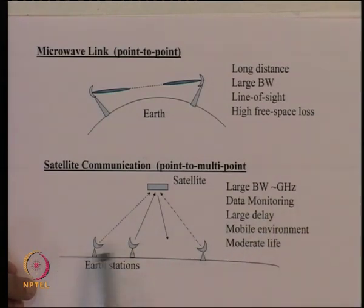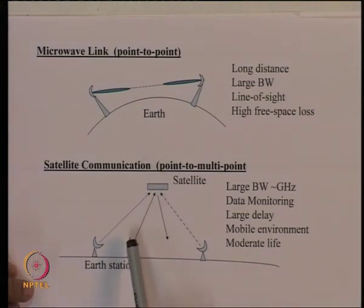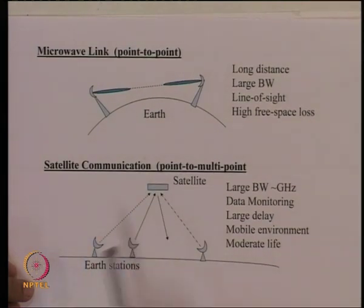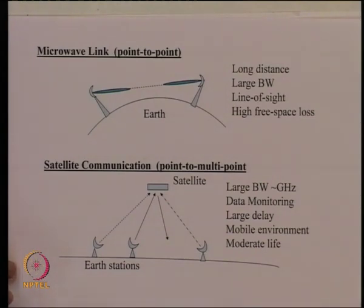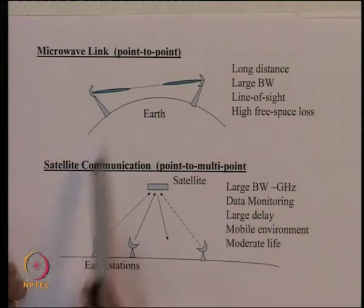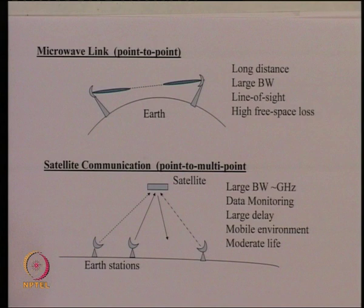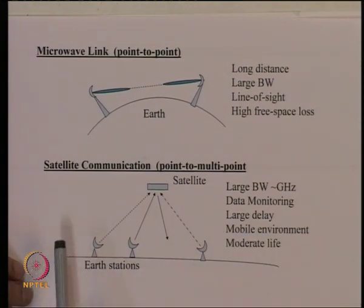One problem with satellite communication is the very large delay — for a geostationary satellite at very high altitude, there is a substantial signal travel delay from earth station to satellite and back. However, this mode has the advantage of providing a mobile environment. Other systems, once cables are laid or microwave towers installed, have no mobility. Satellite lifetime is typically about 7 years, whereas other systems have much longer lifetimes.